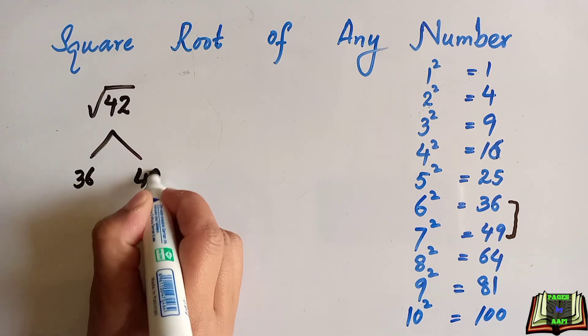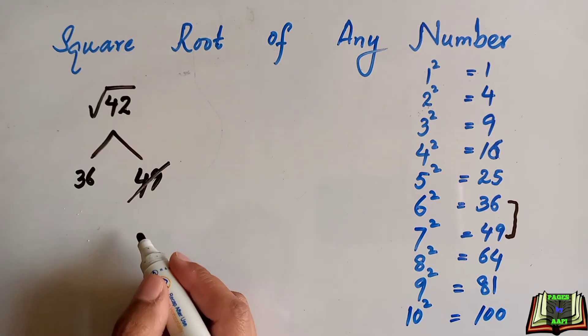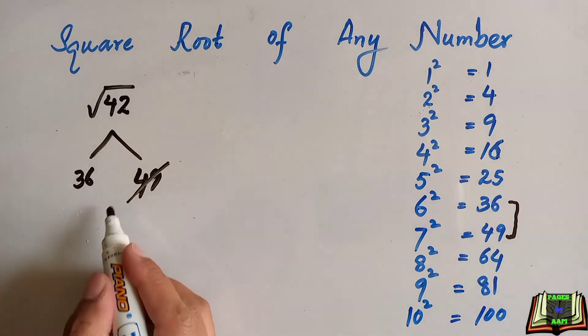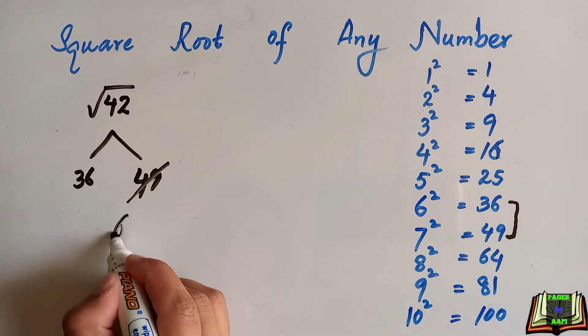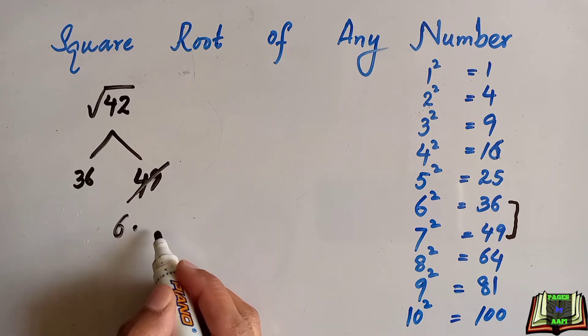As we know, the square root of 42 will be near to 6, so we will cross out 49. 36 is the perfect square of 6, but 42 is not a perfect square, so we have to find the decimal part.